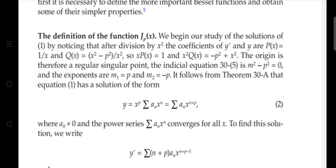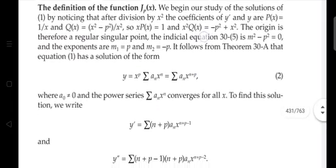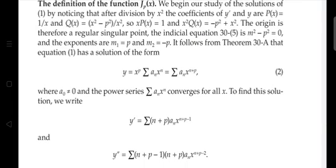The indicial equation gives m² − p² = 0, so m₁ = p and m₂ = −p. The solution has the form y = x^p · Σ aₙ xⁿ, which equals Σ aₙ x^(n+p), where a₀ ≠ 0 and the power series converges for all x.